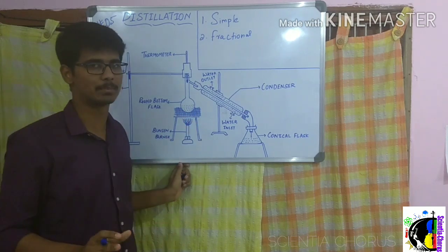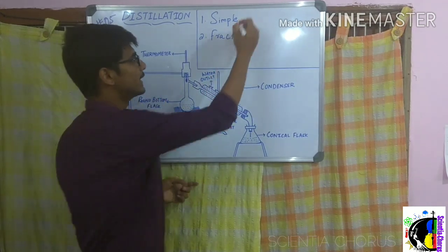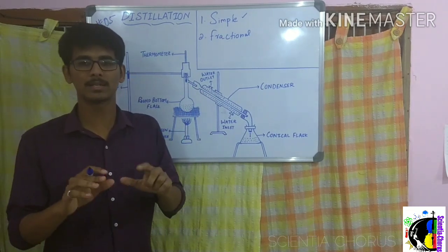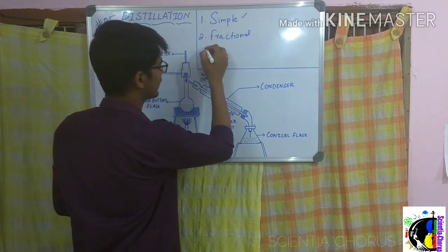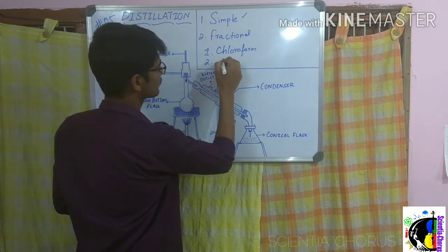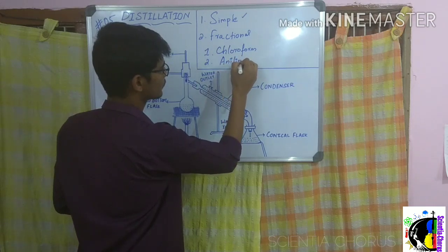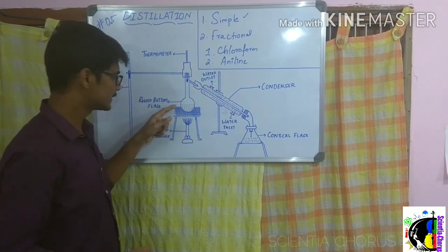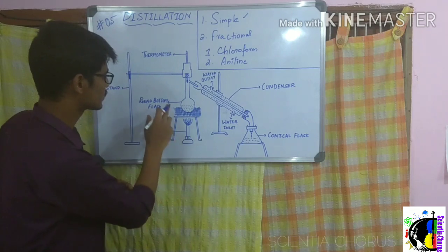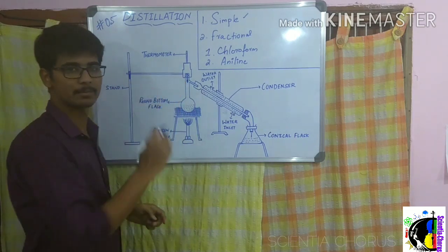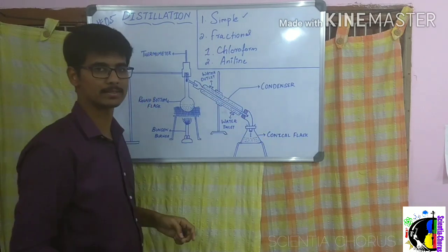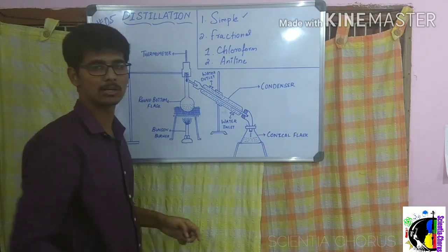Let us take an example to learn about simple distillation. We have taken a miscible liquid which is a homogeneous mixture — for example, chloroform and aniline. The experimental setup for simple distillation consists of a round bottom flask, a thermometer which gives us the temperature, a condenser, and a conical flask which collects the separated component from the mixture.